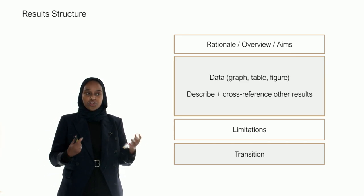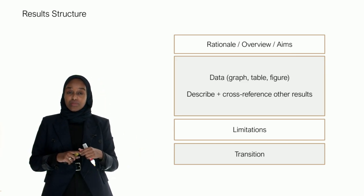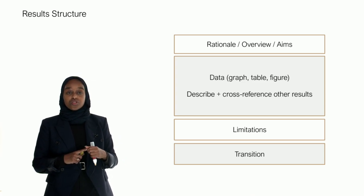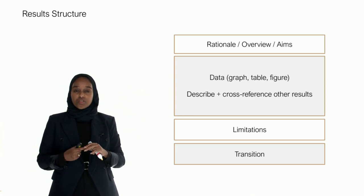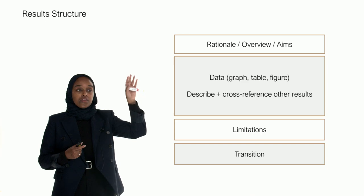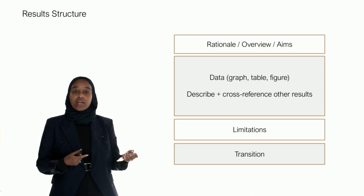So the structure. Now I've shown you one of these for every single chapter so far and this is the one for the result structure. Four main parts for every bit of results: firstly a rationale, a bit of an overview, the aims.